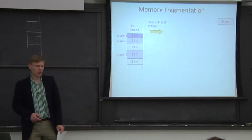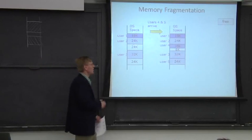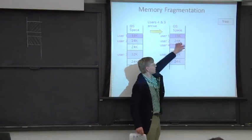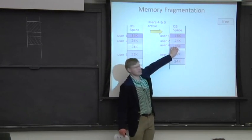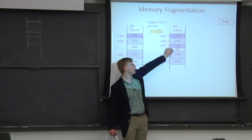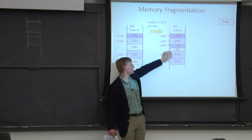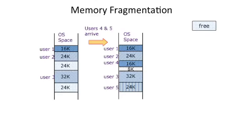So all of a sudden, more users show up and they start to run some processes. User four goes here and fills in this space here. User five goes down there because it can't fit in this eight kilobytes segment. So eight kilobytes free space here and has to go down here. Okay, that's all well and good.